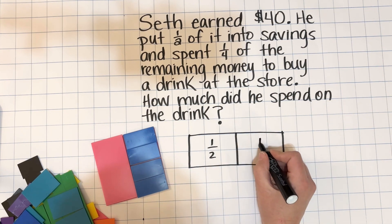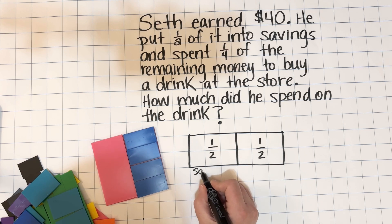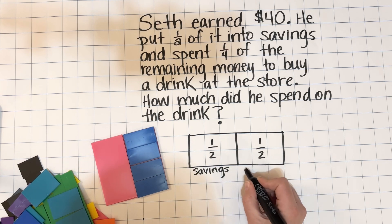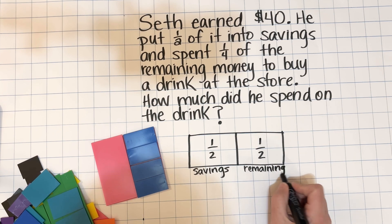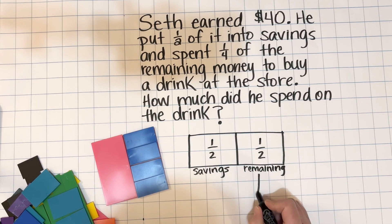Okay, let's take a look at how we can solve this with a bar model, which directly relates to the concrete example we just looked at. We are going to split the bar into halves. One-half is savings, one-half is remaining.